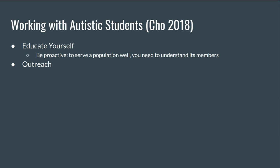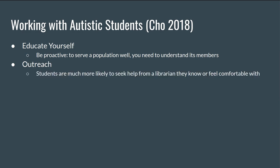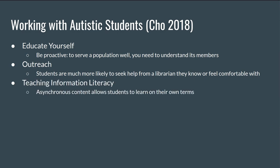Outreach: students are much more likely to seek help from a librarian they know or feel comfortable with. Autistic students may be less comfortable reaching out than neurotypical students, so creating a welcoming environment and spreading the word that you are supportive of disabled students is key. Teaching information literacy: ambiguity, abstract thinking, and understanding audience and point of view is difficult for neurotypical and autistic students alike. Focusing on these topics may be especially helpful. Delivering this content asynchronously allows students to learn on their own time and at their own pace.